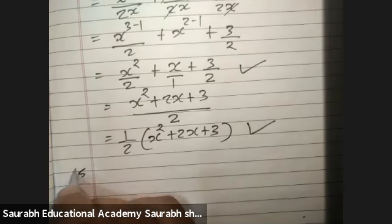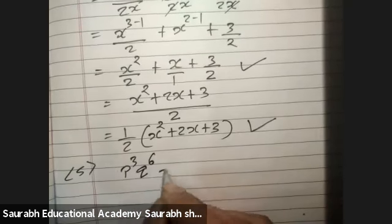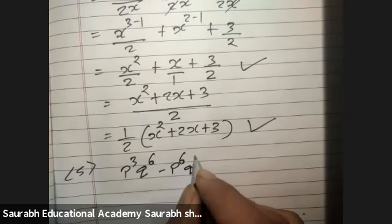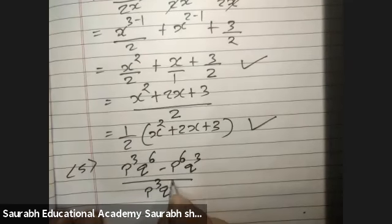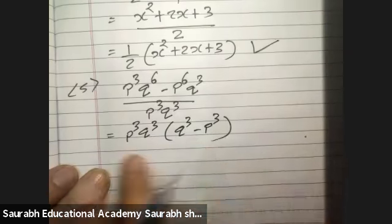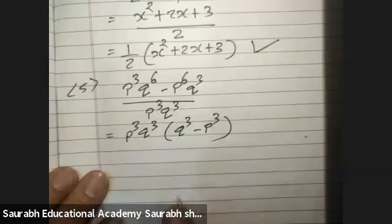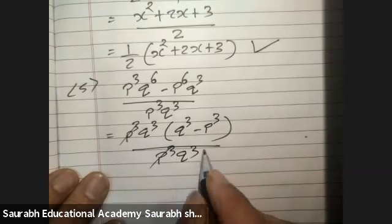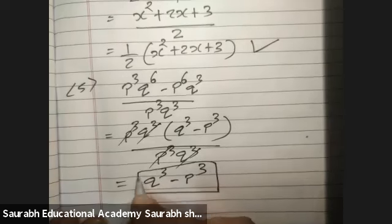Fifth and last one: p cube q raised to 6 minus p raised to 6 q cube, divided by p cube q cube. Taking p cube and q cube common from the numerator gives p cube q cube into bracket q cube minus p cube. Then p cube q cube in numerator and denominator cancel. Final answer: q cube minus p cube. Done.